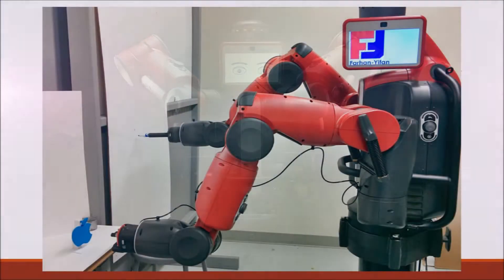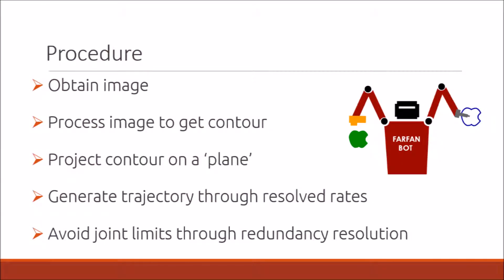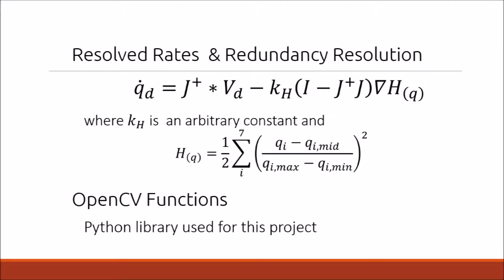We set up Baxter to look at an object with its hand camera while gripping a marker with its right arm. The robot and the computer had to obtain an image to process and get a contour, then draw the contour on a plane using resolve rates while avoiding arm joint limits using redundancy resolution. The resolve rates and redundancy resolution equations used are as shown.